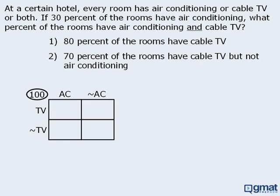Before we examine the statements, let's see what other information we can add. The question tells us that 30% of the rooms have air conditioning, so the sum of those two boxes must be 30% of 100, which is 30. Since there are 100 rooms altogether and 30 have air conditioning, the remaining 70 rooms must not have air conditioning, so the sum of those two boxes must be 70.